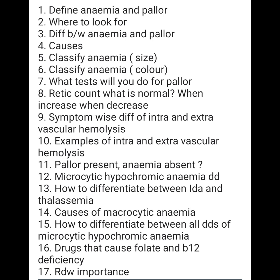Classify anemia on the basis of color. We use the parameter MCH — mean corpuscular hemoglobin. If it is less than 27 picograms, it is hypochromic. If it is 27 to 32, it is normochromic. And there is nothing called hyperchromic.